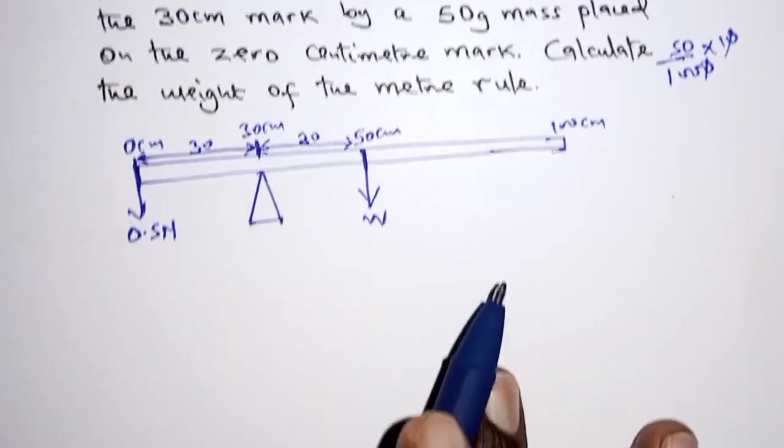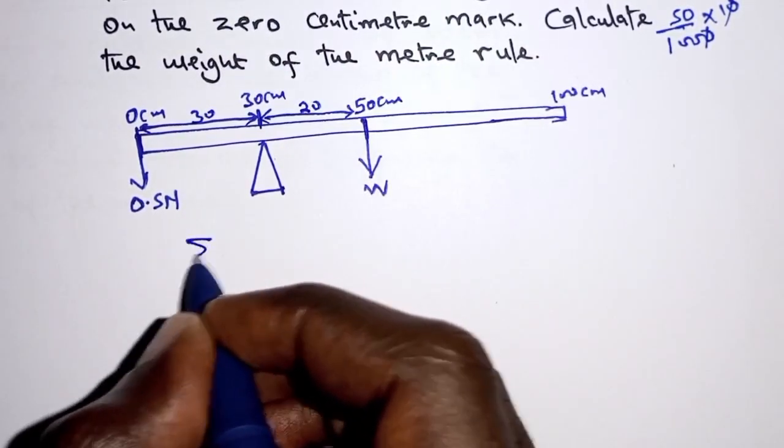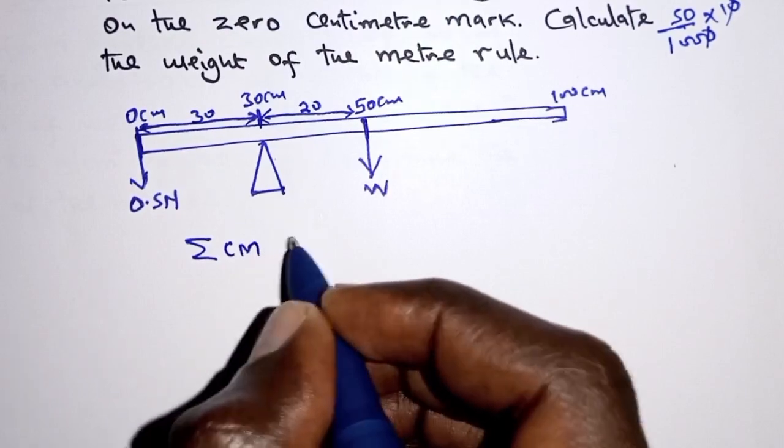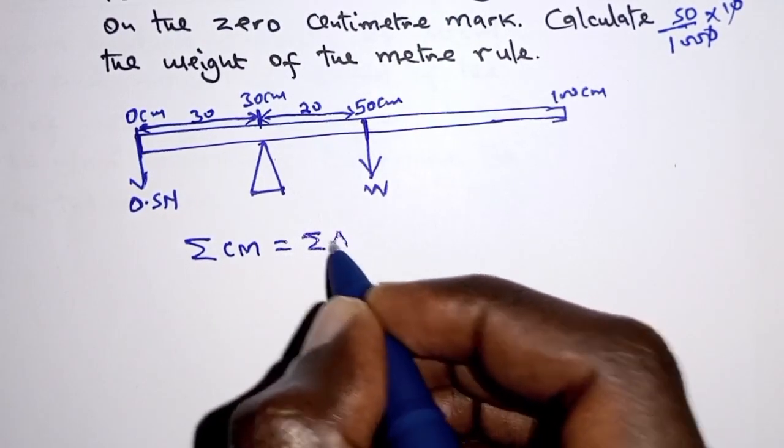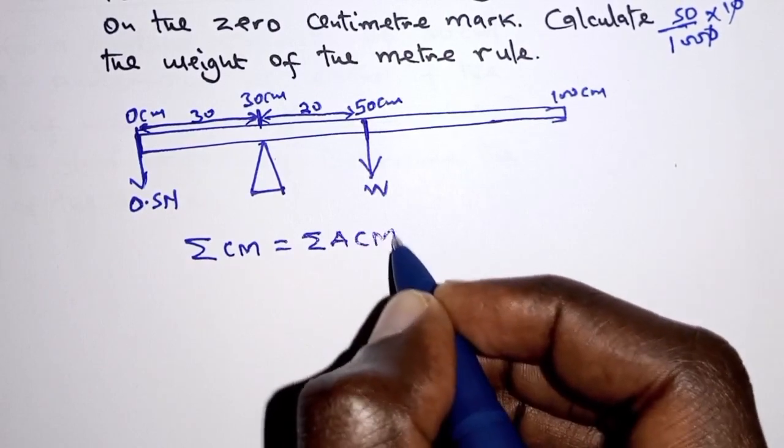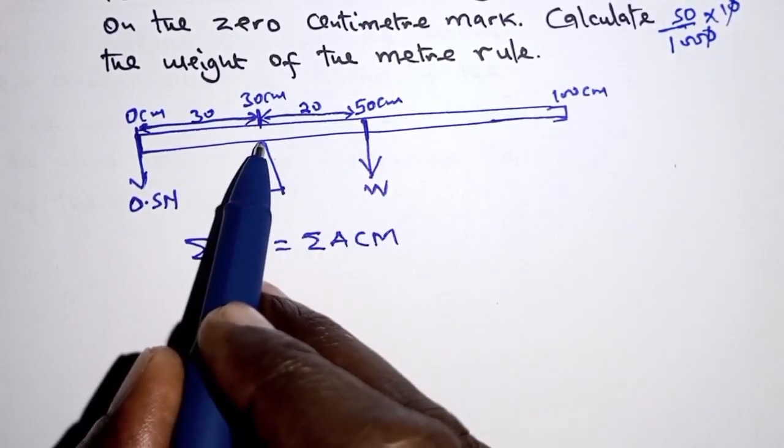So applying the principle of moments, we know that sum of clockwise moments should be equal to the sum of anti-clockwise moments. That is about the same point, and the point there is the pivot.